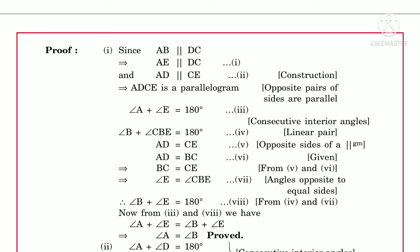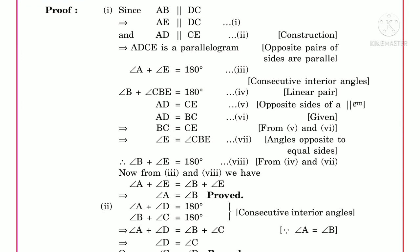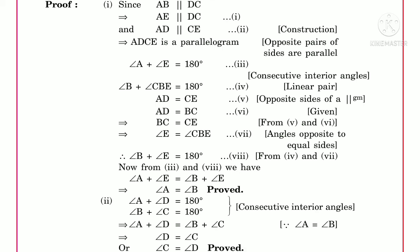Similarly, angle B plus angle CBE equals 180 degrees — consecutive interior angles. Comparing the two equations: angle A plus angle E equals 180 degrees, and angle B plus angle E equals 180 degrees. Both equal 180 degrees, so cancelling angle E from both sides, we get angle A equals angle B.